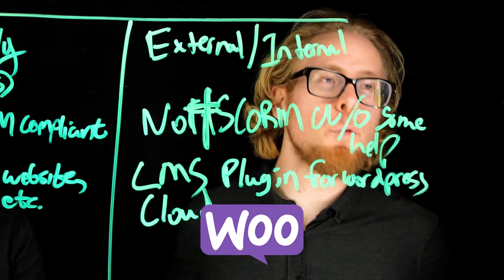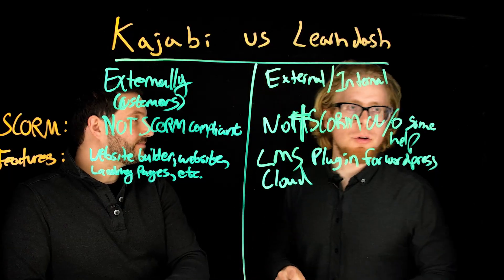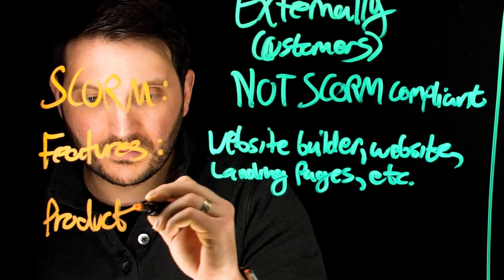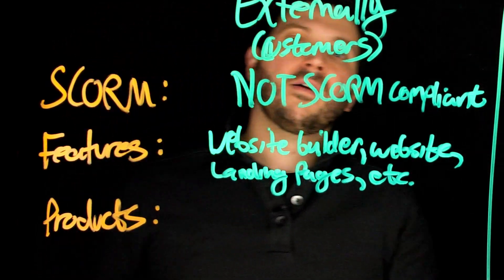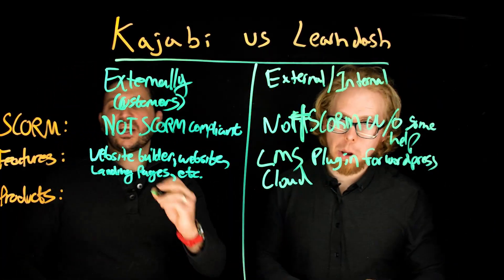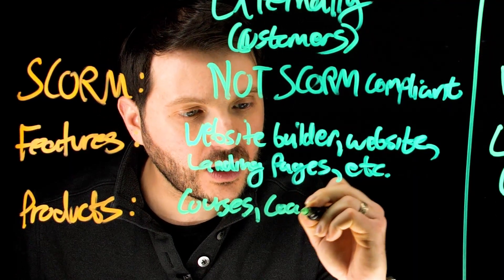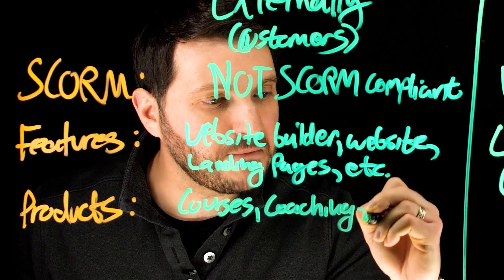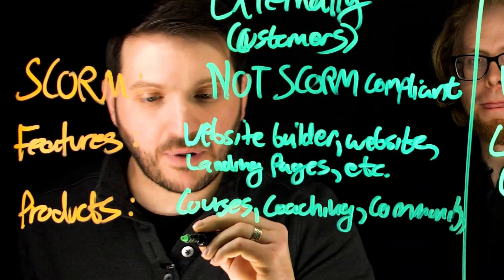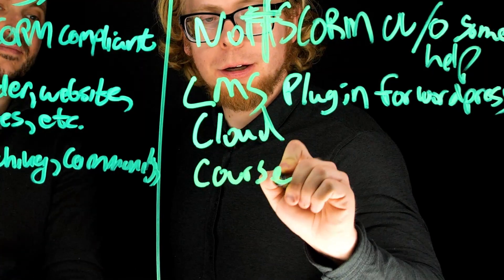Kajabi offers four types of products: courses, coaching, communities, and podcasts. LearnDash only does courses because it is strictly an LMS.